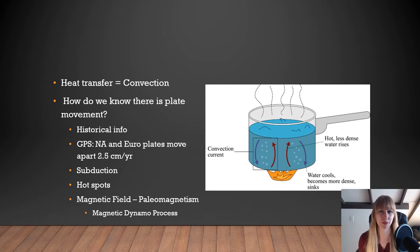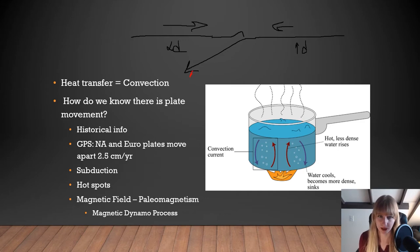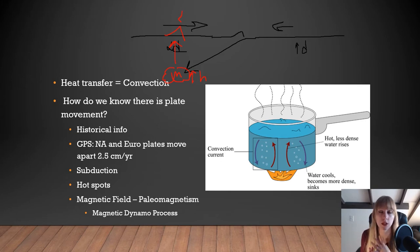Other reasons we know about plate movement include subduction, where two plates come together and the denser plate travels beneath the other. As it goes down, there's an increase in heat, leading to magma formation, which comes up forming volcanoes. We have the Cascades, Indonesia, Japan, the Aleutians off Alaska, and New Zealand — all due to subduction.